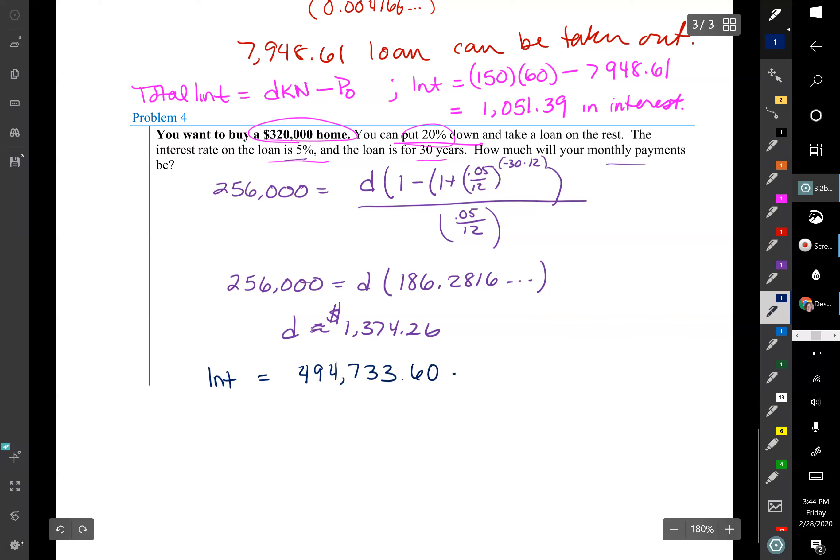So I would have my interest would be the $494,733.60 minus the value of my house, what I took the loan out for, $256,000. So it's not actually the value of the house, it's just what I, that 80% of what the house cost.